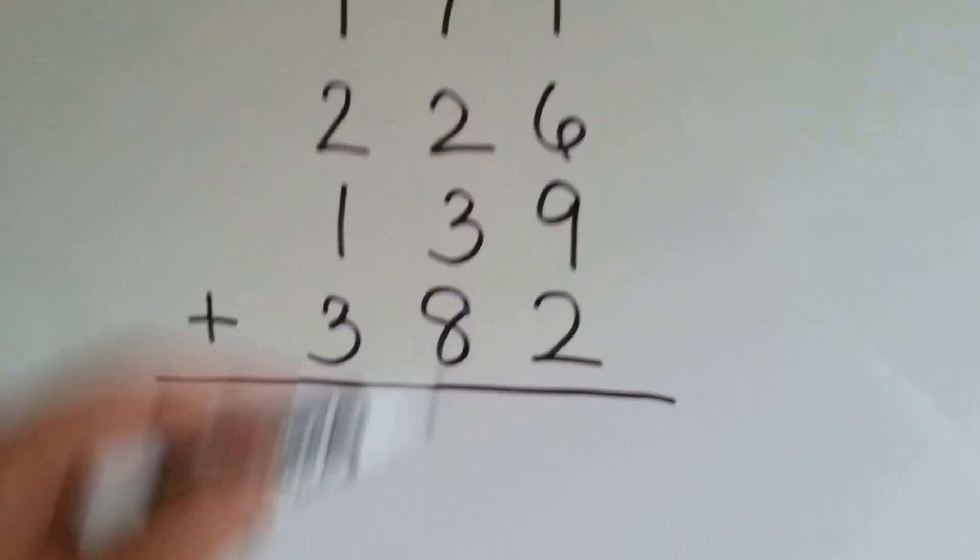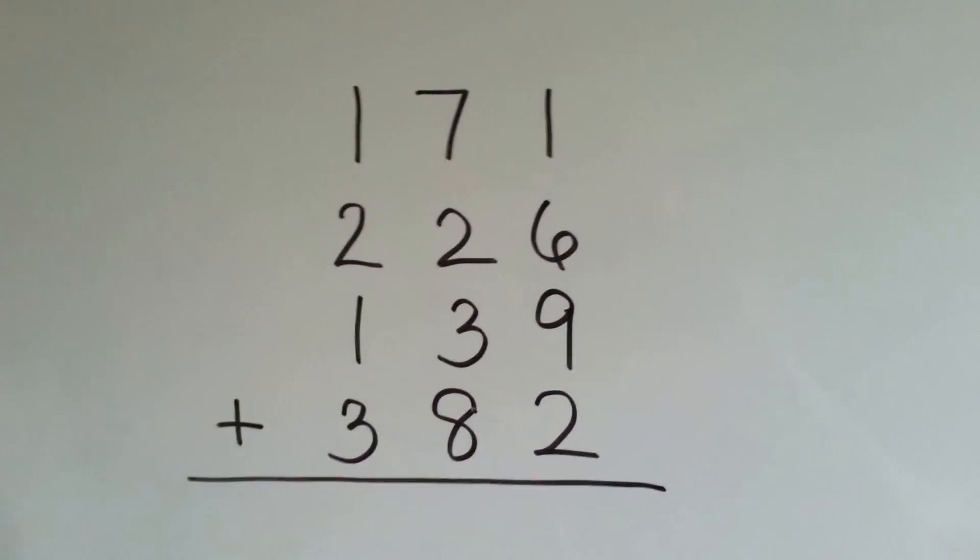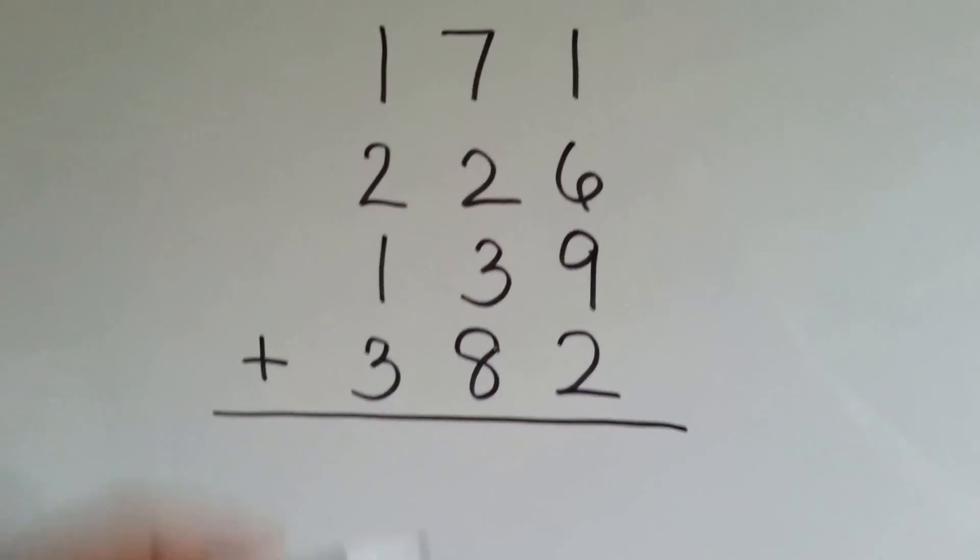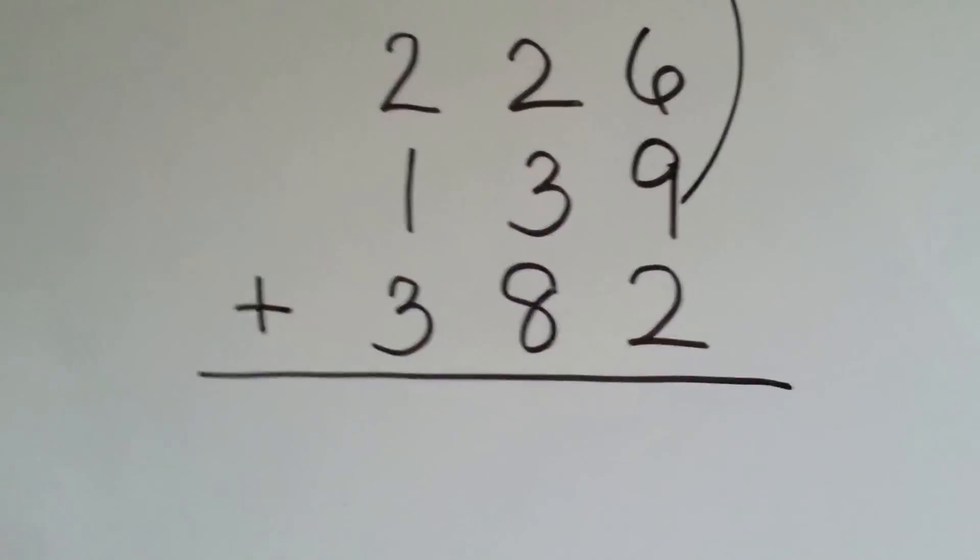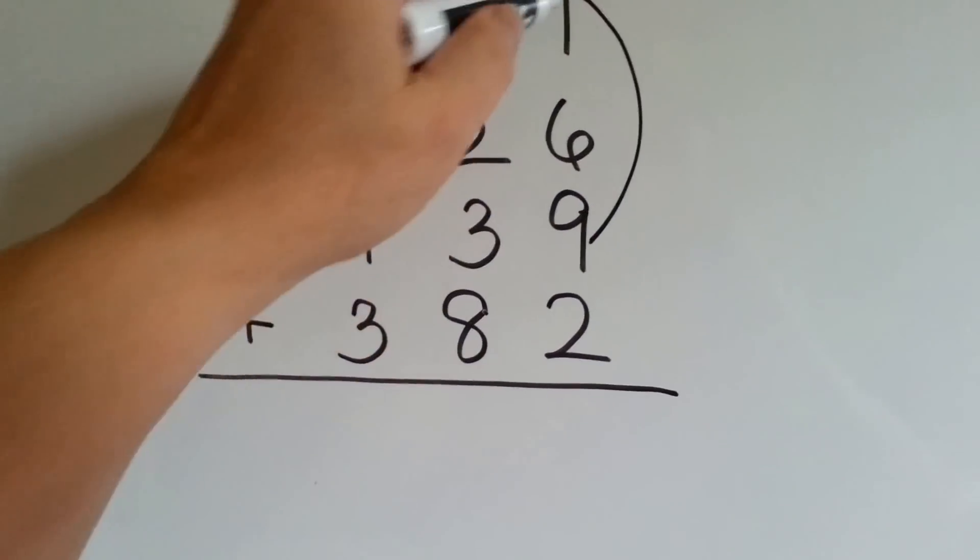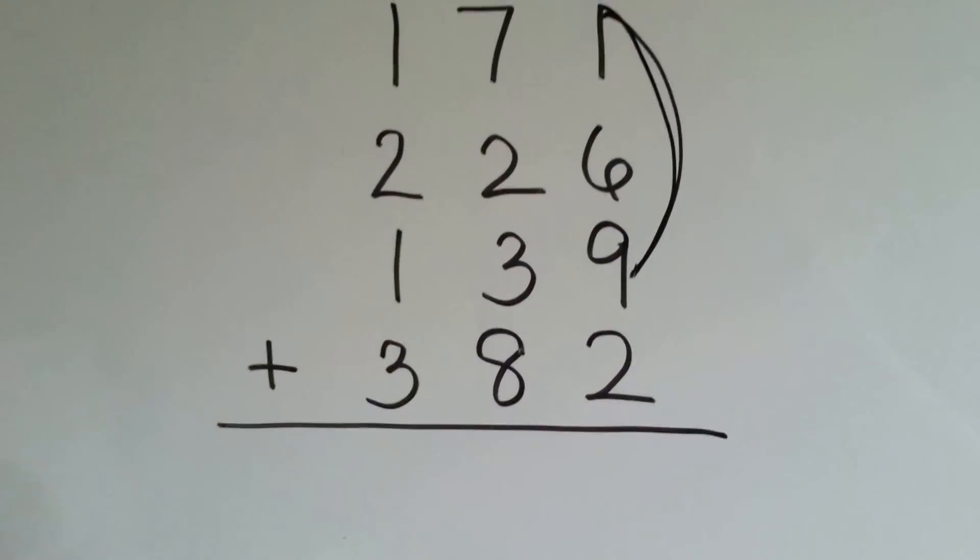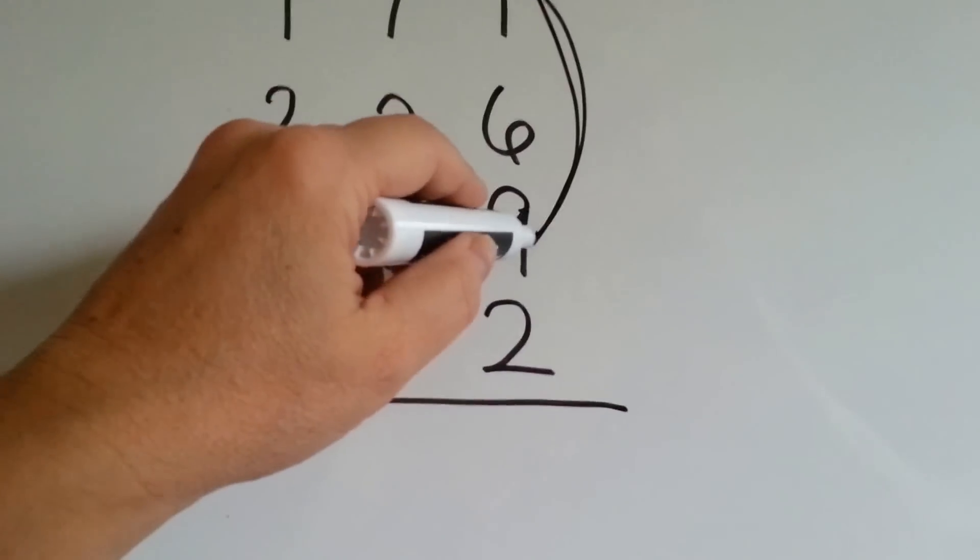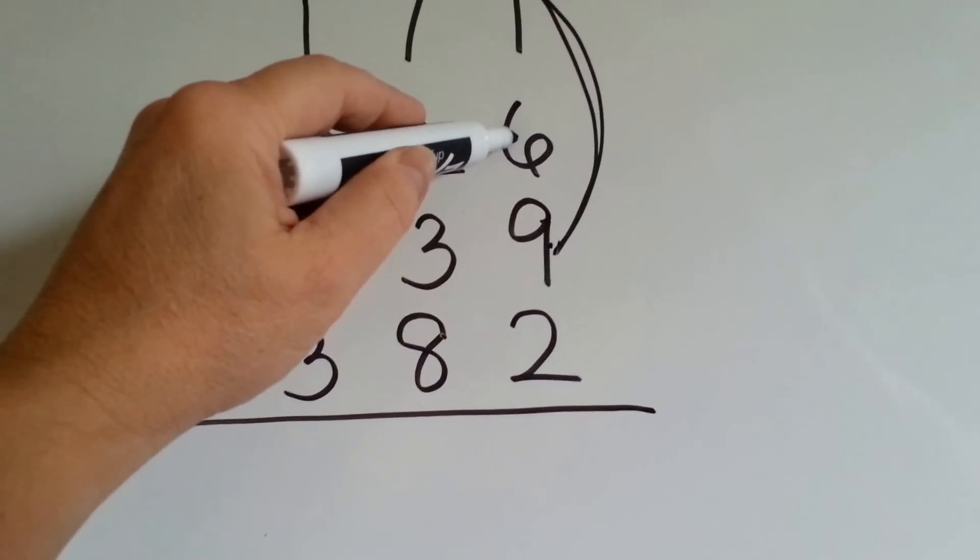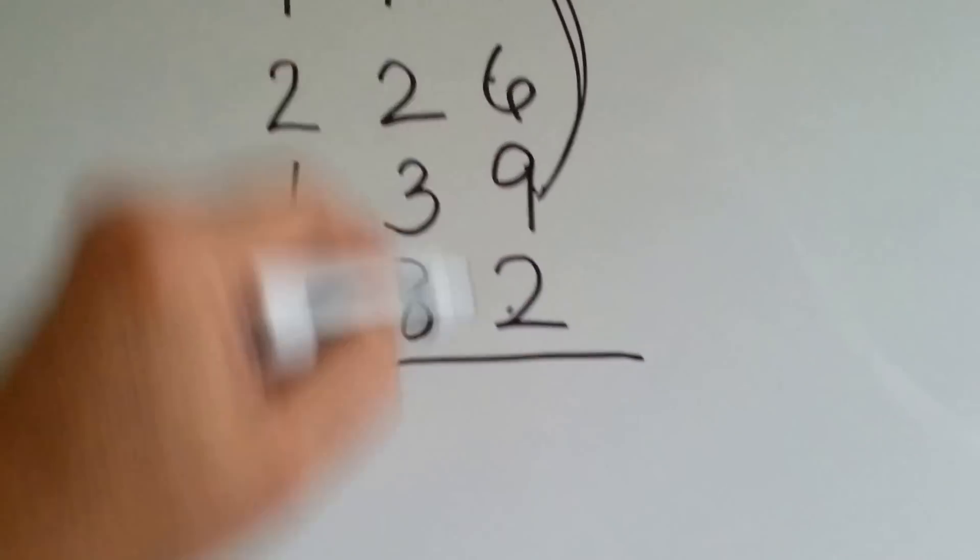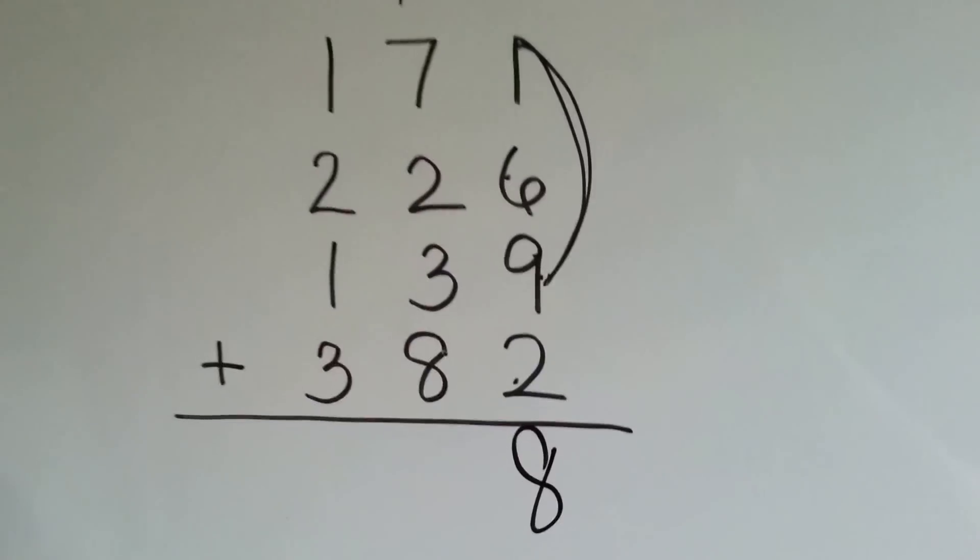Let's try this one. We add the 1s first. Do you see some compatible numbers? Look it, 1 and 9 makes 10. So, we do that right away, and then we add the 6, which is 16, 17, 18. Carry the 1, put the 8 down.